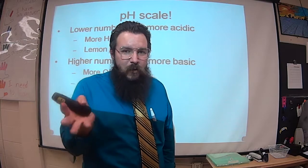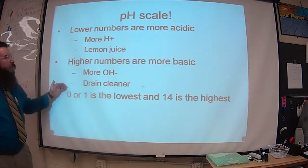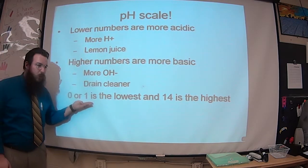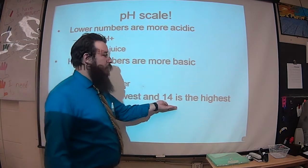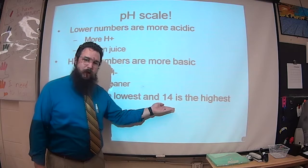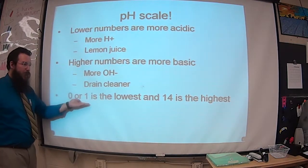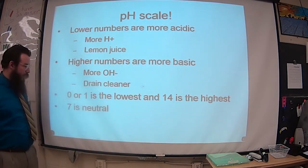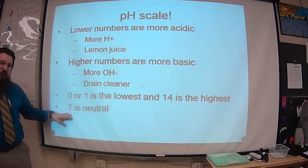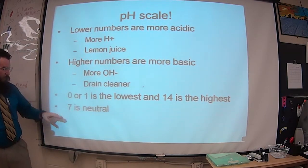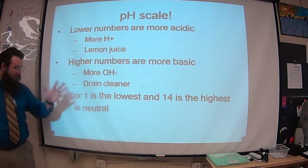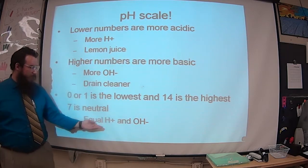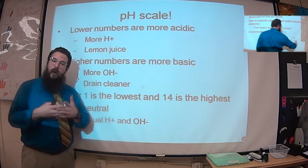On the pH scale, because it's logarithmic, zero is the lowest — representing the highest amount of H⁺ — and fourteen is the highest, representing the highest amount of OH⁻. That puts seven right in the middle as neutral. Pure water is a seven; it's neutral and it's not going to react with anything. Being neutral means we have an equal amount of hydrogen and hydroxide ions — they combine to make pure H₂O.